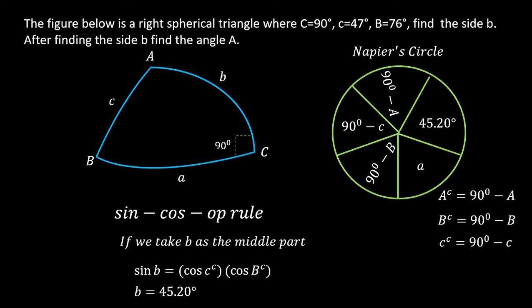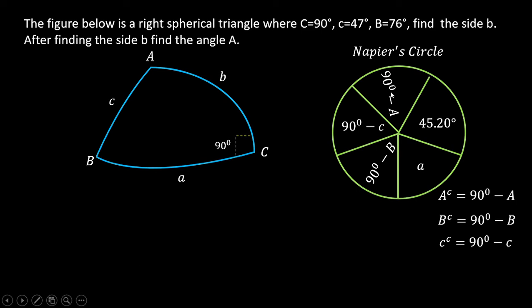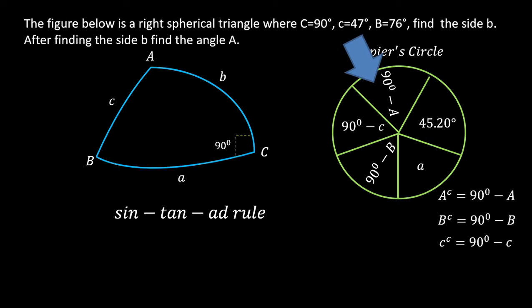If we use the sin-cos-of rule again, its opposite sides have no given values for A, so that is not suitable. The best choice is the sin-tan-add rule, since we have the adjacent sides available. Applying the sin-tan-add rule, the middle part is 90 degrees minus A, and the adjacent parts are identified accordingly.